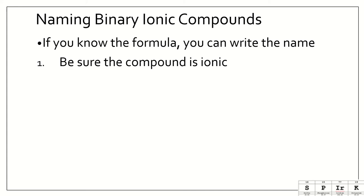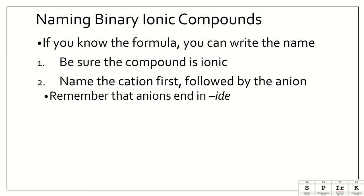So if you know the formula, you can write the name. So the first thing you have to do is be sure that the compound is ionic. And remember that's a metal with a nonmetal. So you're going to name the cation first followed by the anion. And lucky for you, the formula, the cation, is written first. So remember that anions end in I-D-E.